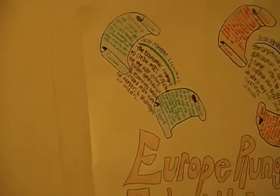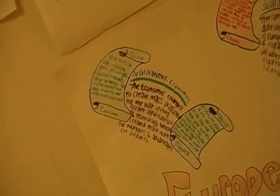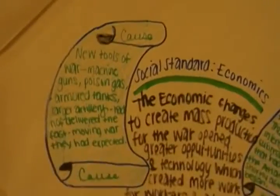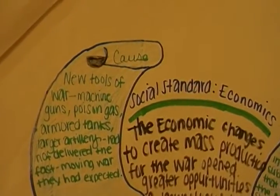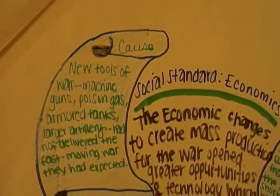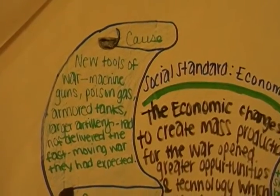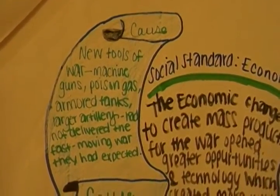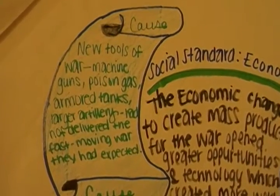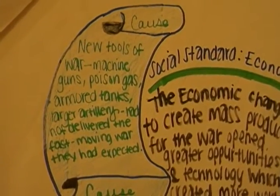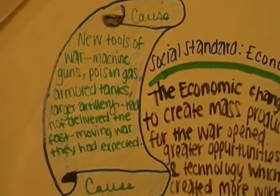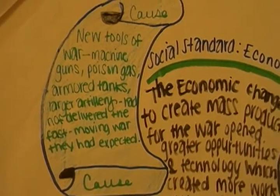Here's an example from the first day. We have a cause: new tools of war — machine guns, poison gas, armored tanks, and larger artillery.